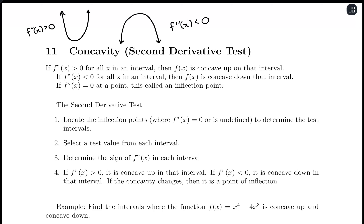As a refresher, an inflection point is where we switch concavity. This comes through nicely with the x³ function: the function is all increasing, but we switch from concave down to concave up. That point where we switch is the inflection point — that's where concavity changes.